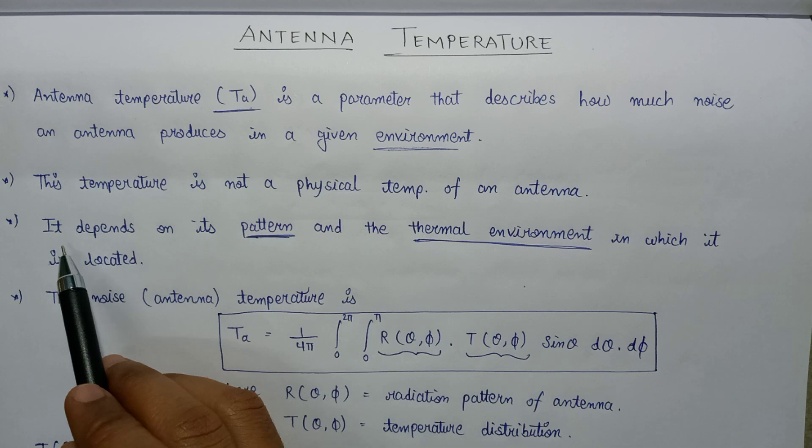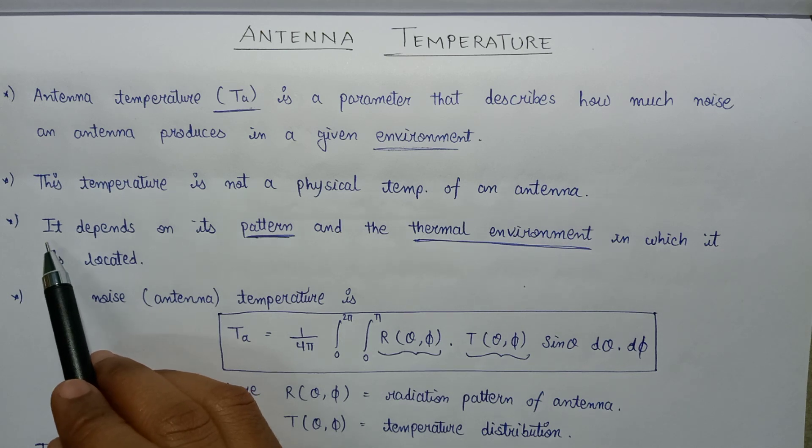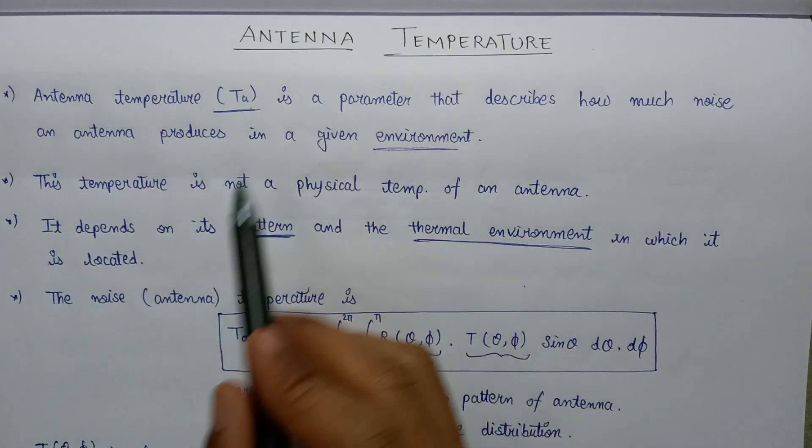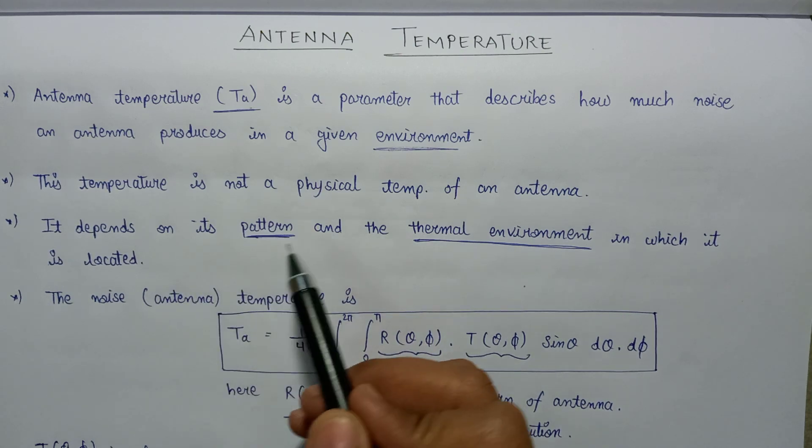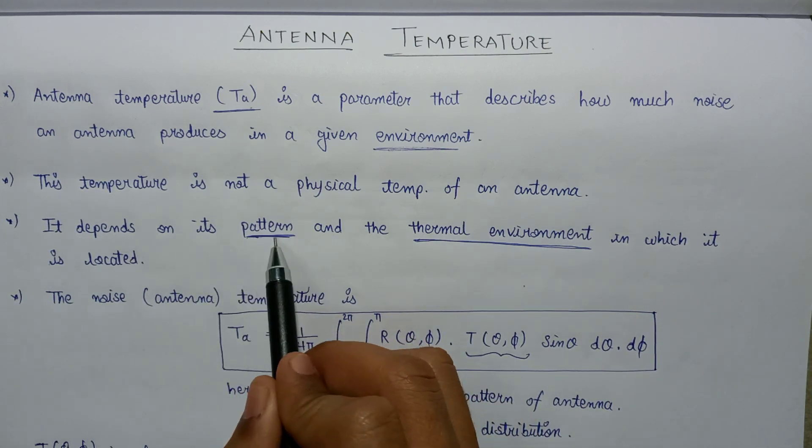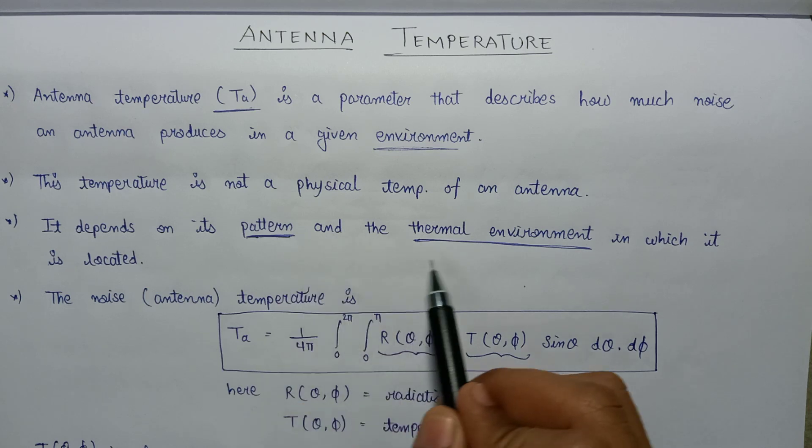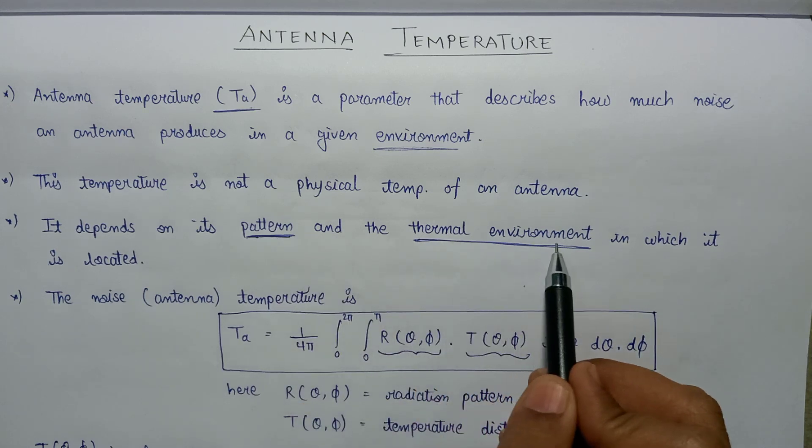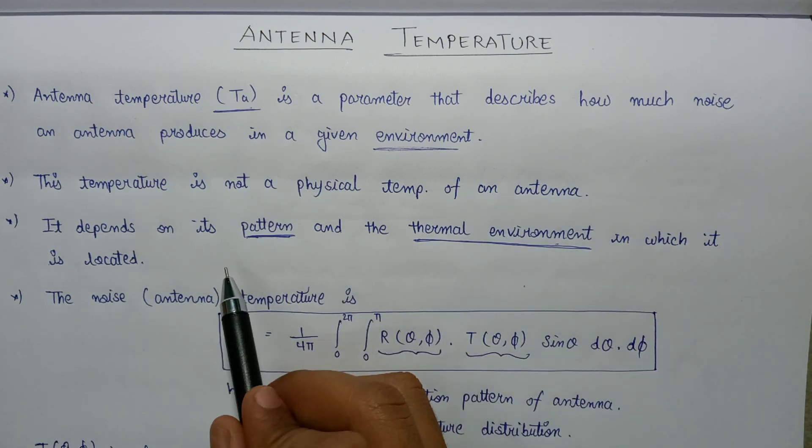Moving on to the next point, the noise temperature of an antenna or antenna temperature depends upon two parameters. First one is the radiation pattern of an antenna. Second one is the thermal environment in which the antenna is located.